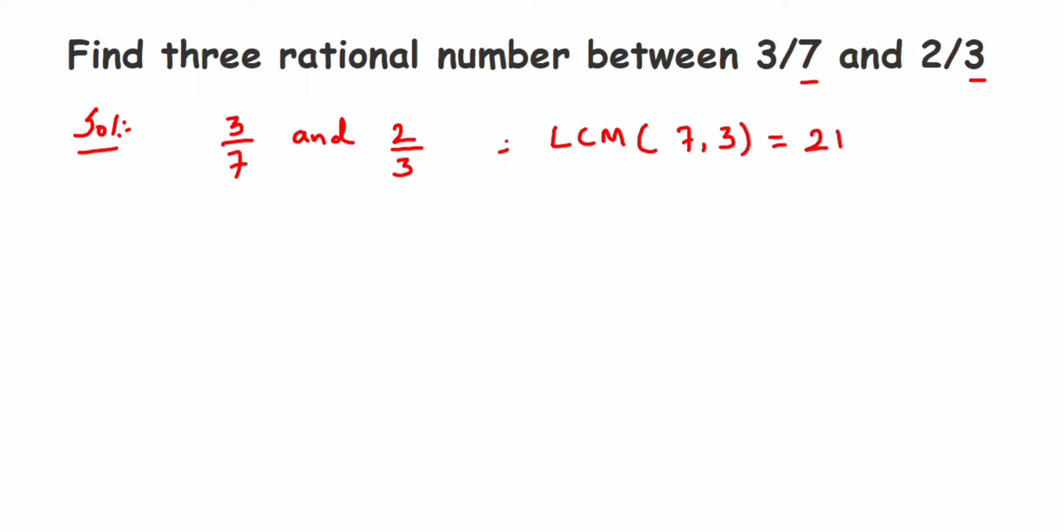Now we're going to change the denominator of each of these rational numbers to 21. It's like finding an equivalent rational number with denominator 21. So here we have 3/7, and I want 21 in the denominator. With 7, what should we multiply to get 21? It's 3. So multiply 3 in the denominator and in the numerator, and it will become 9/21. Remember, this 9/21 is an equivalent rational number of 3/7.